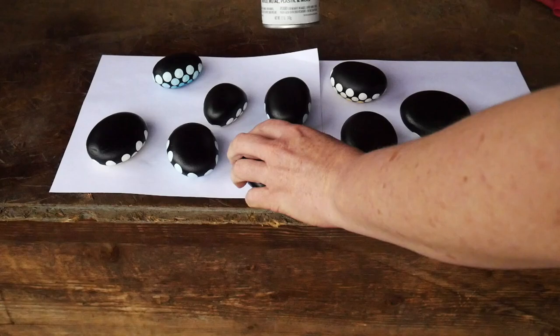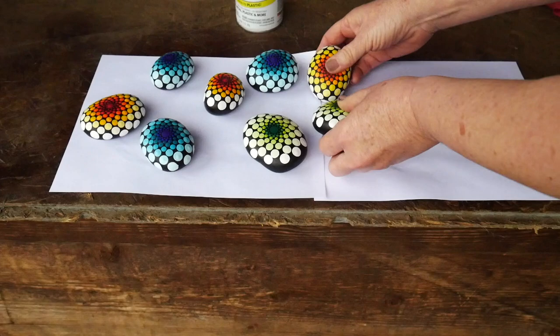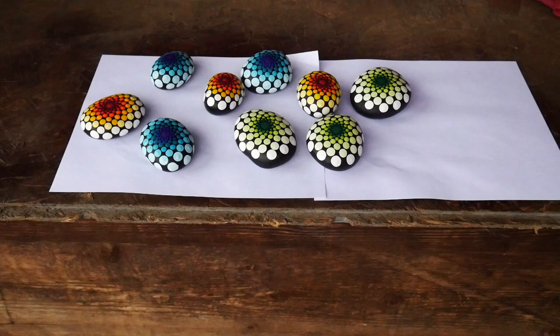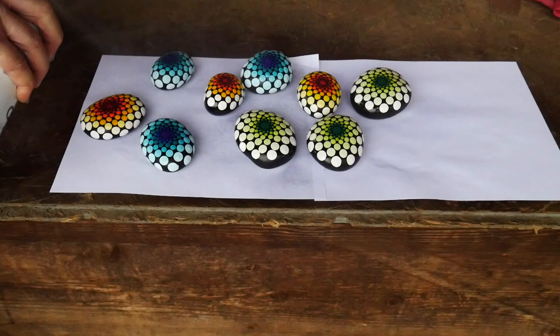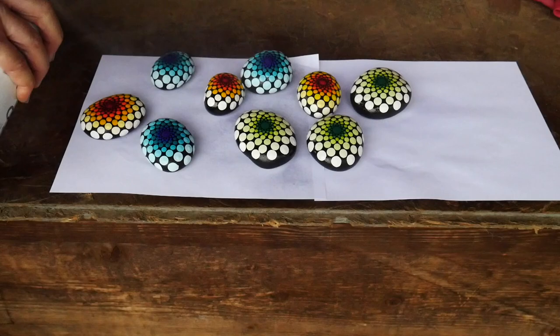I let all of those rocks dry overnight and then I sprayed the backside and let that dry for several hours. Now I'm flipping them over and I'm going to spray the front side with my clear acrylic. This will make them shiny and it will help preserve the color if I use them out in the garden in the sunlight. I'm going to let that dry and I will do a second coat and then they are all done. Aren't they beautiful?